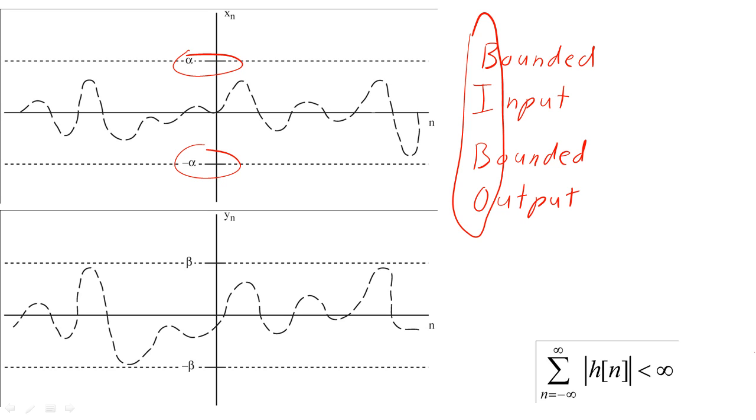So, if we are looking at the function h of n, the system will be BIBO-stable if the summation of the magnitude of the impulse response is bounded. In other words, the magnitude of the h of n must not grow without bounds.